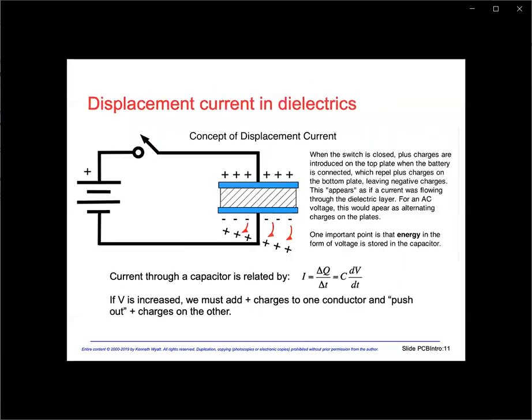Before we get to the actual physics of wave propagation, we need to understand the concept of displacement current. Consider a capacitor charged by a battery: once the transient settles down, we'll end up with a plus charge on the top plate, which repels like charges on the bottom plate, inducing a negative charge. Now if an AC voltage is applied, it will appear as if the capacitor is conducting current. James Maxwell realized this and called the effect displacement current.